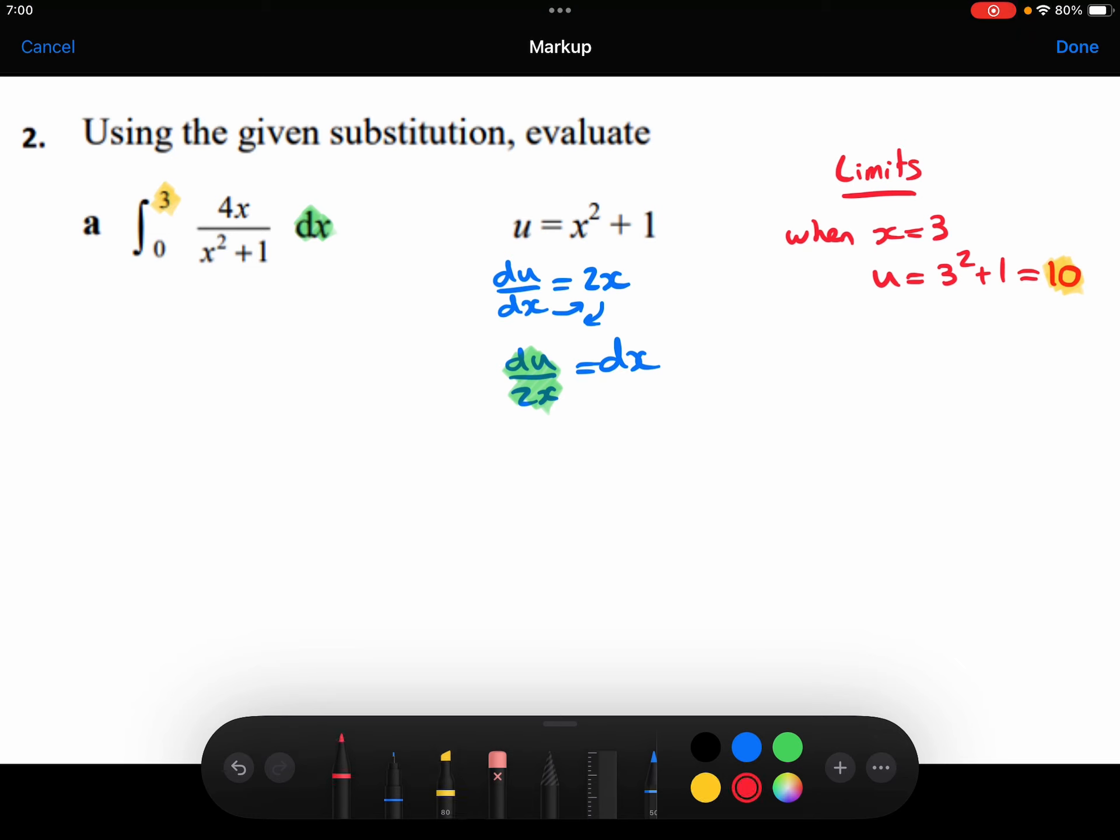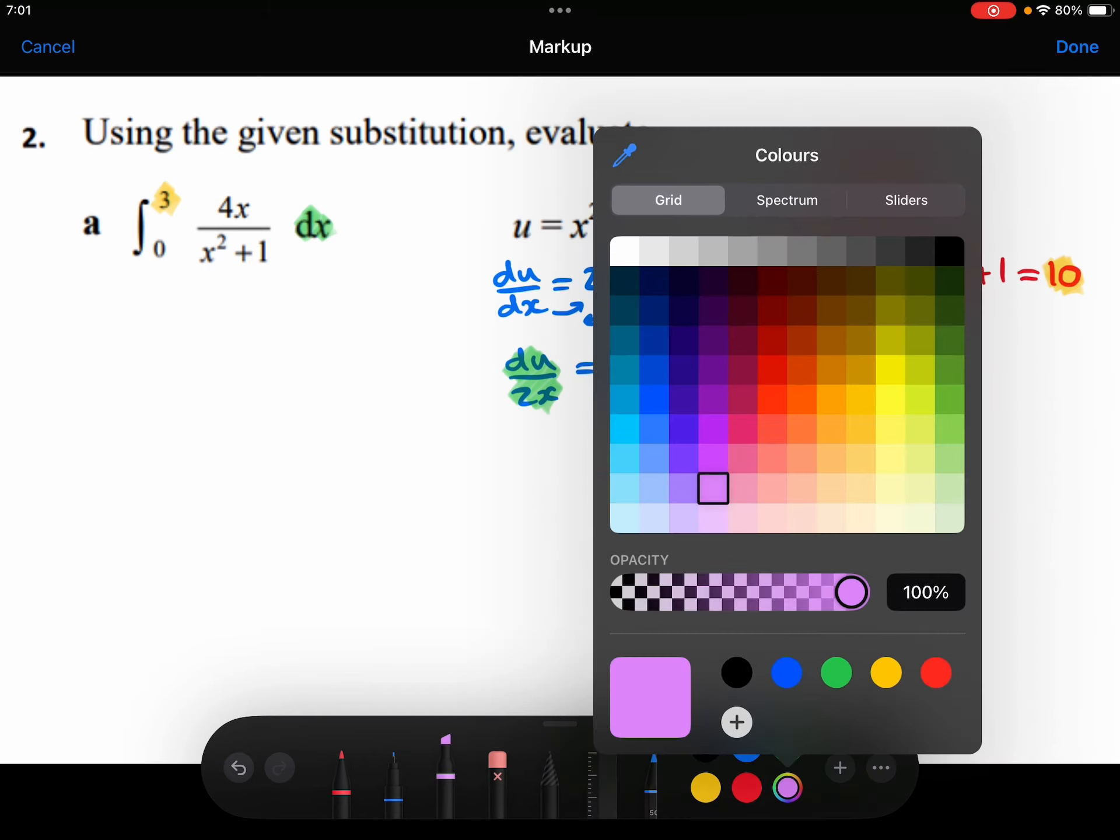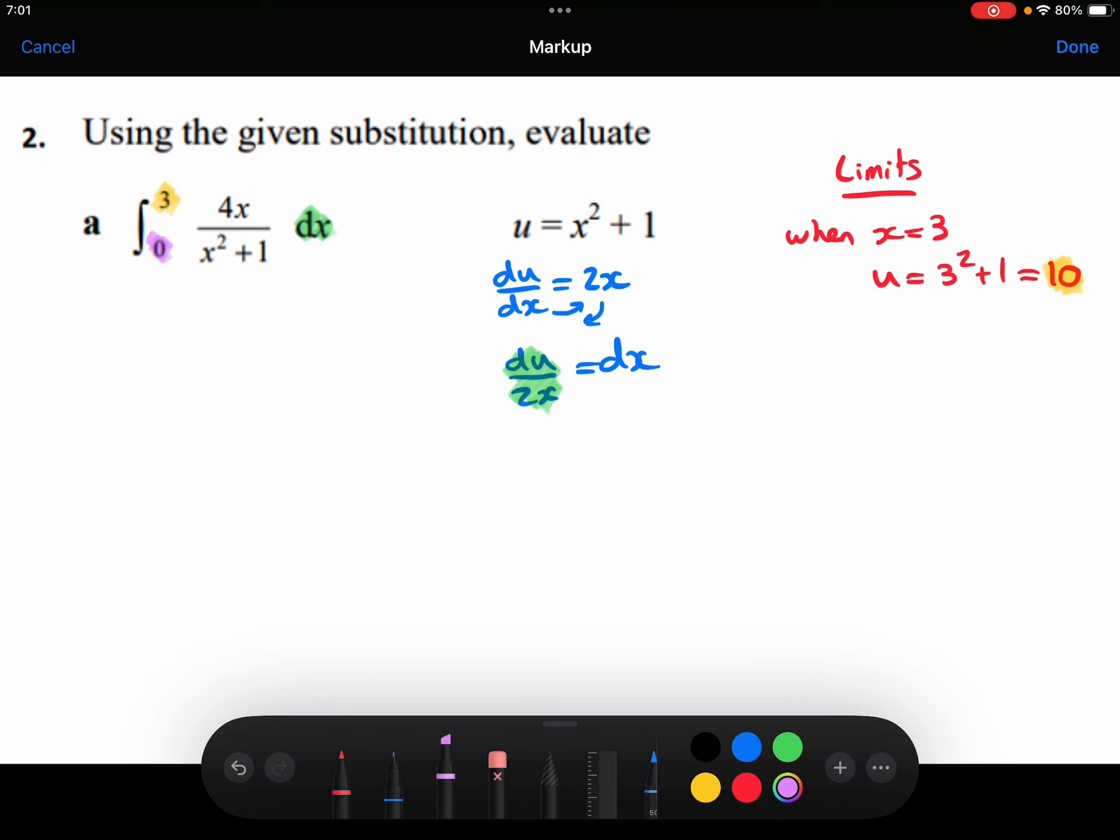Now let's focus on my lower limit, which is when x is 0. So let's work out what u is in that case. I'll have u equals 0 squared plus 1, which is 1. So my lower limit is 1.